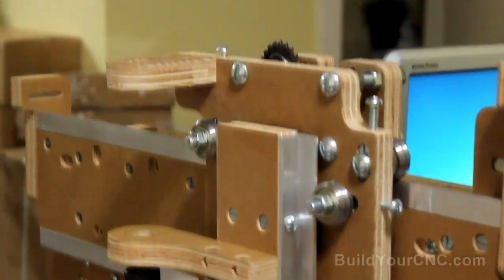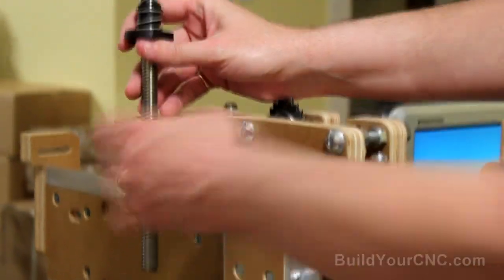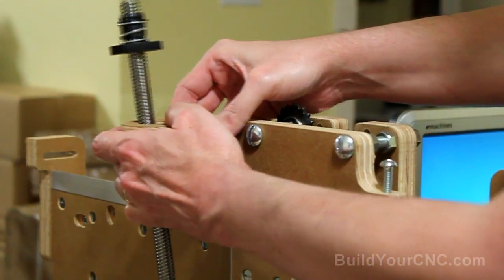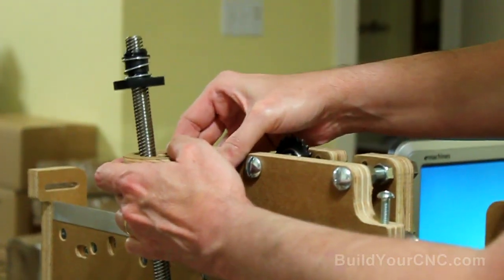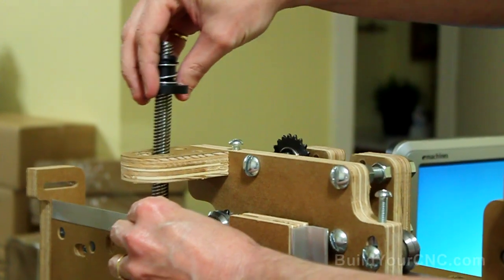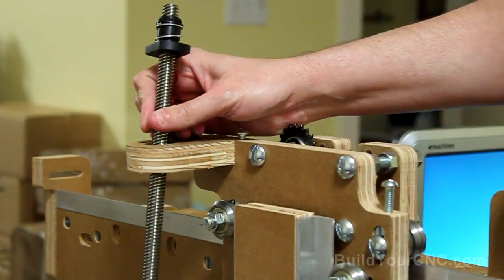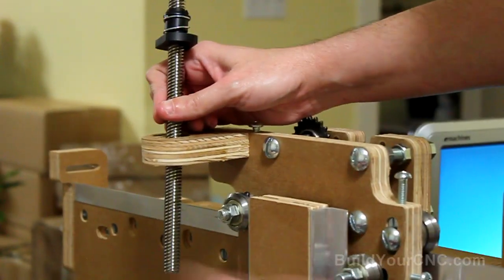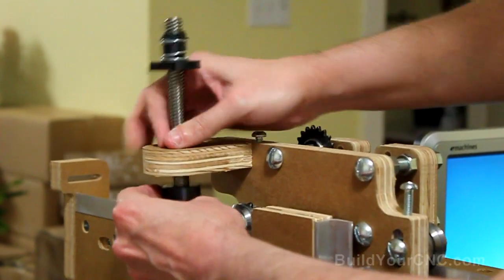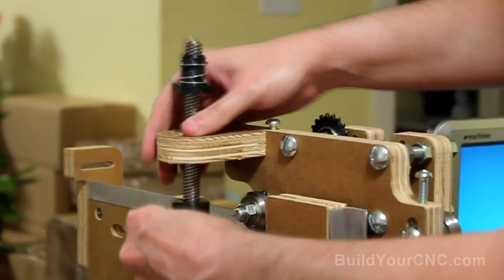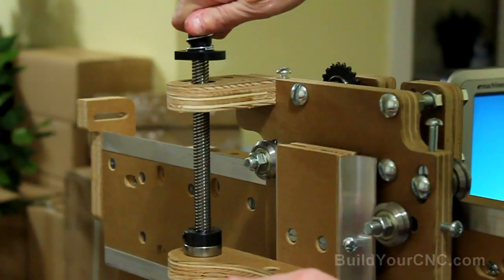And we're going to now put the lead screw in. And remember that we kept this loose so we can maneuver it this way to adjust it. And we can also maneuver this in this direction to make sure that this is perfectly level. And we also have to put in a collar and a bearing. Make sure you go pretty much all the way down.